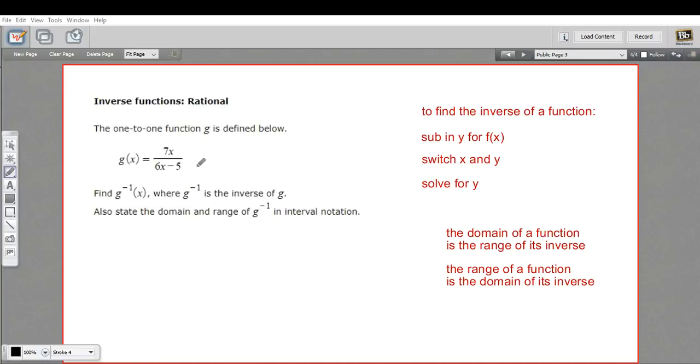In this problem, we have a rational function, g of x equals 7x over 6x minus 5, and we're being asked to find the inverse of this function, and then also state both its domain and its range.